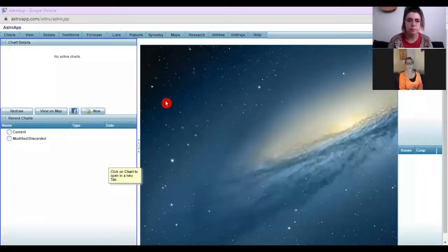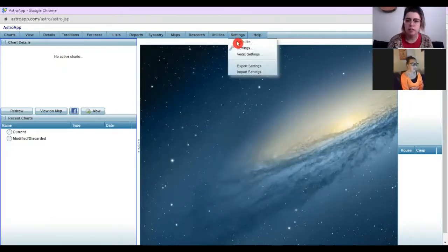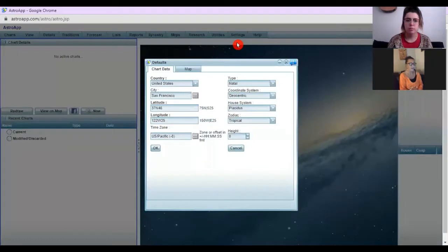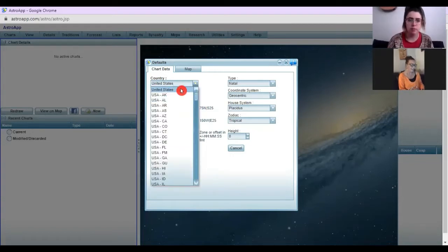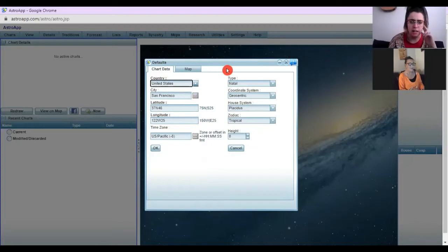All right, here we go. Fantastic. So if you go to settings, and then default settings. Perfect. This is what's going to come up every time you go to draw a chart wheel. So I would put as a city, your own city and your own country. Yeah, of course. But that's okay, I can do that later, no problem.